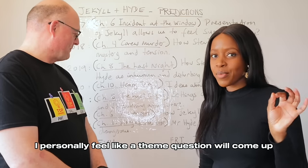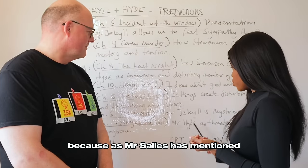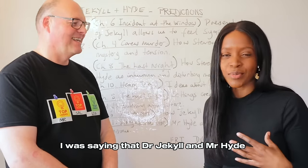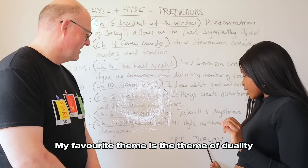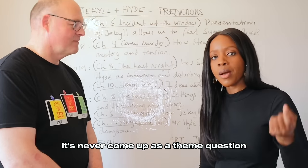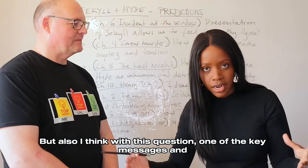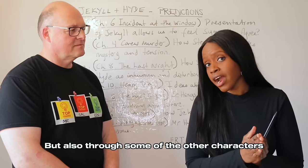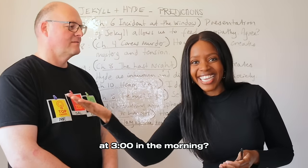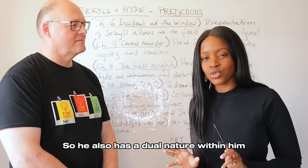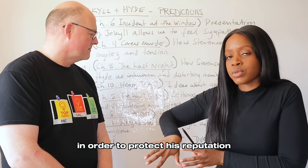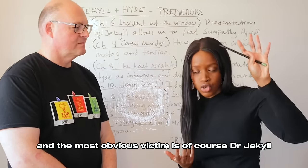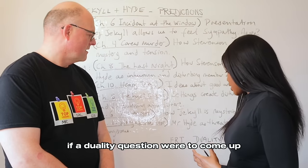I personally feel a theme question will come up. We've had Jekyll and Hyde character questions for the last two years. The theme I think will come up — and my favourite theme in this text — is duality. It's never come up as a theme question, and it's one of the key messages explored throughout the novel. It's not just about Dr. Jekyll and Mr. Hyde — consider what Enfield was doing at the end of the world at three o'clock in the morning: indulging his darker desires. Many Victorian gentlemen in the novella have a dual nature, which they hide to protect their reputation. The most obvious victim is of course Dr. Jekyll.